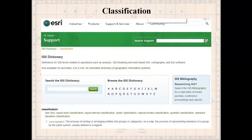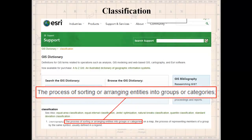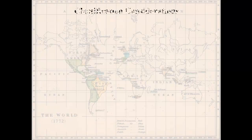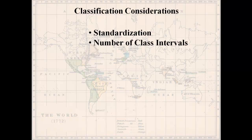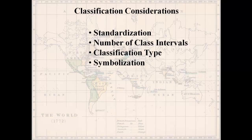Classification — what is it? It's the process of sorting or arranging entities into groups or categories. We're going to take data with multiple numeric values and sort them into groups. There are several things to keep in mind: standardization, the number of class intervals you want to use, the classification technique, and how you're going to symbolize it on the map.